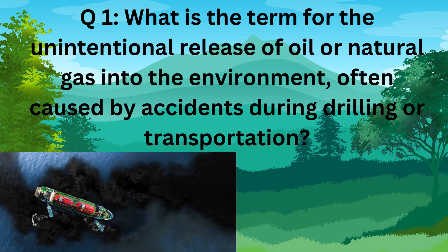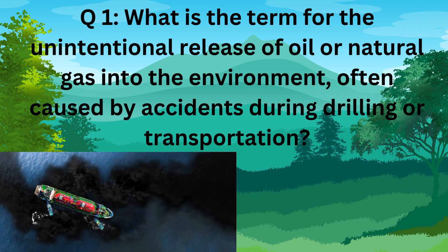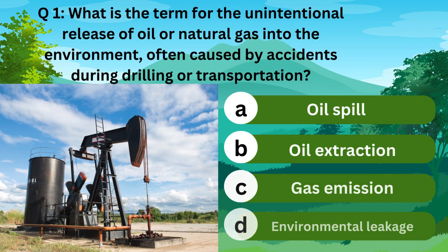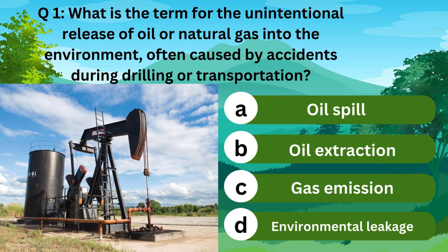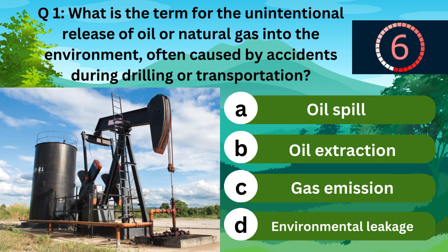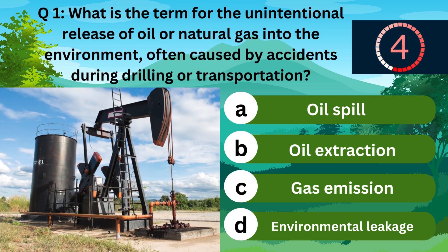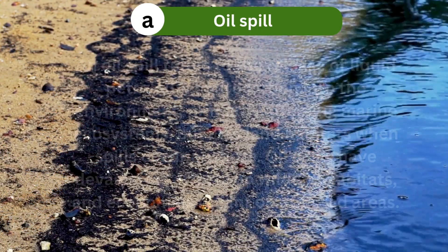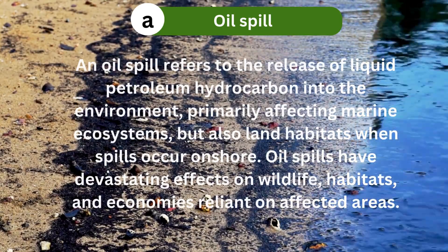Question 1. What is the term for the unintentional release of oil or natural gas into the environment, often caused by accidents during drilling or transportation? A. Oil spill. B. Oil extraction. C. Gas emission. Or D. Environmental leakage. The correct answer is A. Oil spill.